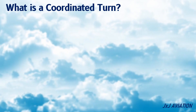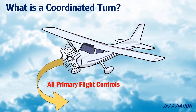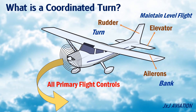First, let's understand what is a coordinated turn. To perform a coordinated turn, all three primary flight controls — the ailerons, elevator, and the rudder — are required. The ailerons are used to bank the aircraft. The rudder is used to turn the aircraft into the bank. The elevator is used to maintain level flight.